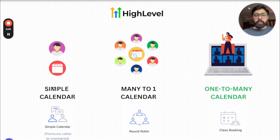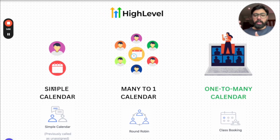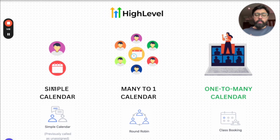We also have the round robin calendar, which is for when you have multiple agents and you want to round robin based on availability. When a lead books into the calendar, it will auto-assign the appointment to whoever is available or has priority. It is also called a many-to-one calendar.